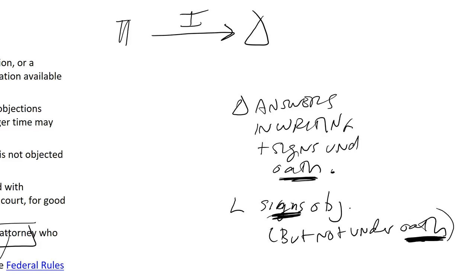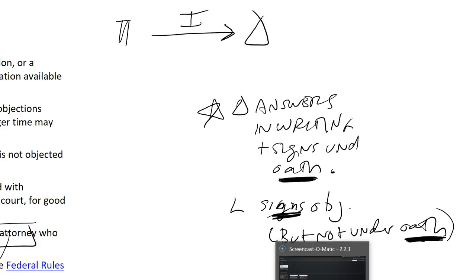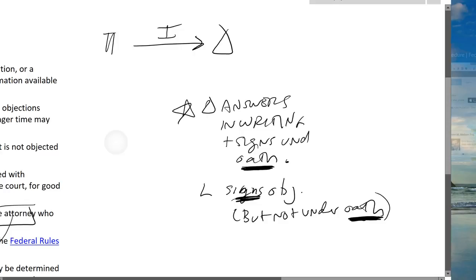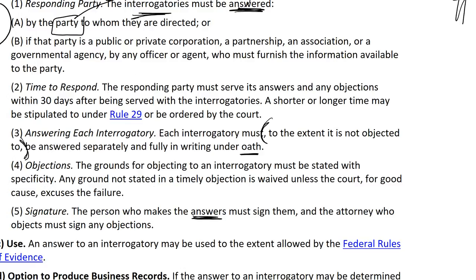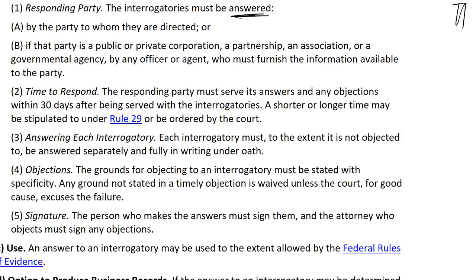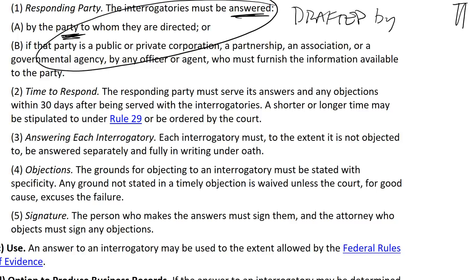Why doesn't the lawyer sign under oath? Think about it: who knows the facts? The party knows the facts, not the lawyer. It's the party that's supposed to know the facts, so it's the party certifying the truth by signing under oath. Now, you might ask: technically the answers are by the party, but let's be honest — the answers are really drafted by the lawyer, aren't they? That is quite true. But the lawyer and client have to work together to answer the questions. The client may need to find information within their custody, possession, or control. The lawyer will have attorney-client privileged communications back and forth with the client, may prepare some work product and drafts.